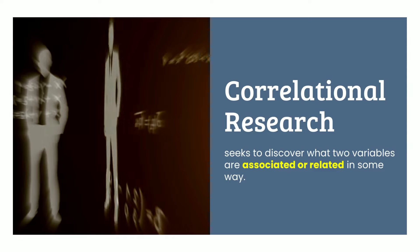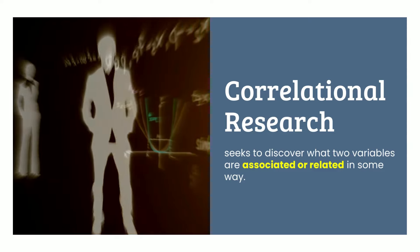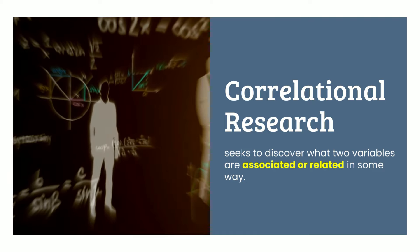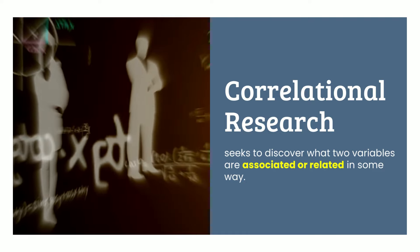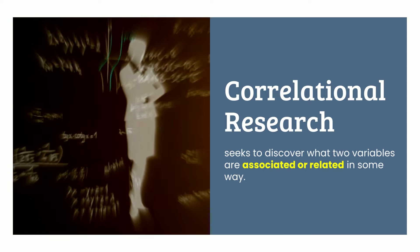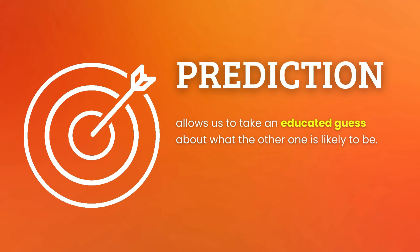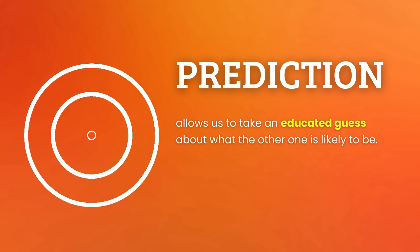Correlational research seeks to discover what two variables are associated or related in some way. One of the main reasons we want to know about correlation is for prediction — if two variables are correlated, then knowing one allows us to take an educated guess about what the other is likely to be.